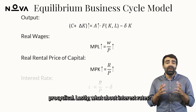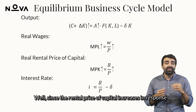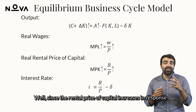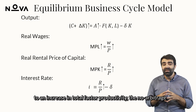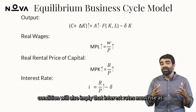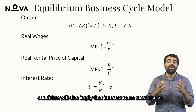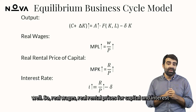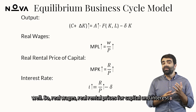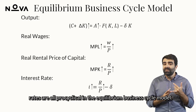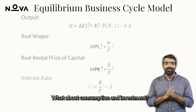Lastly, what about interest rates? Since the rental price of capital increases in response to an increase in total factor productivity, the no-arbitrage condition will also imply that interest rates must rise as well. So, real wages, real rental prices for capital, and interest rates are all pro-cyclical in the equilibrium business cycle model.